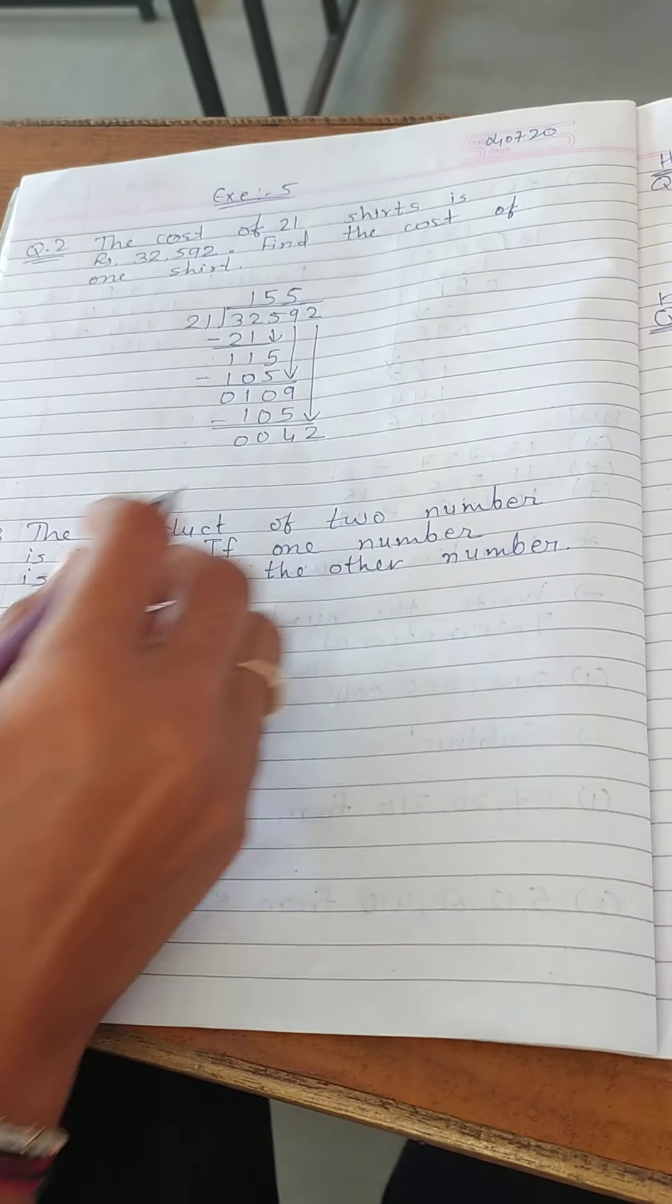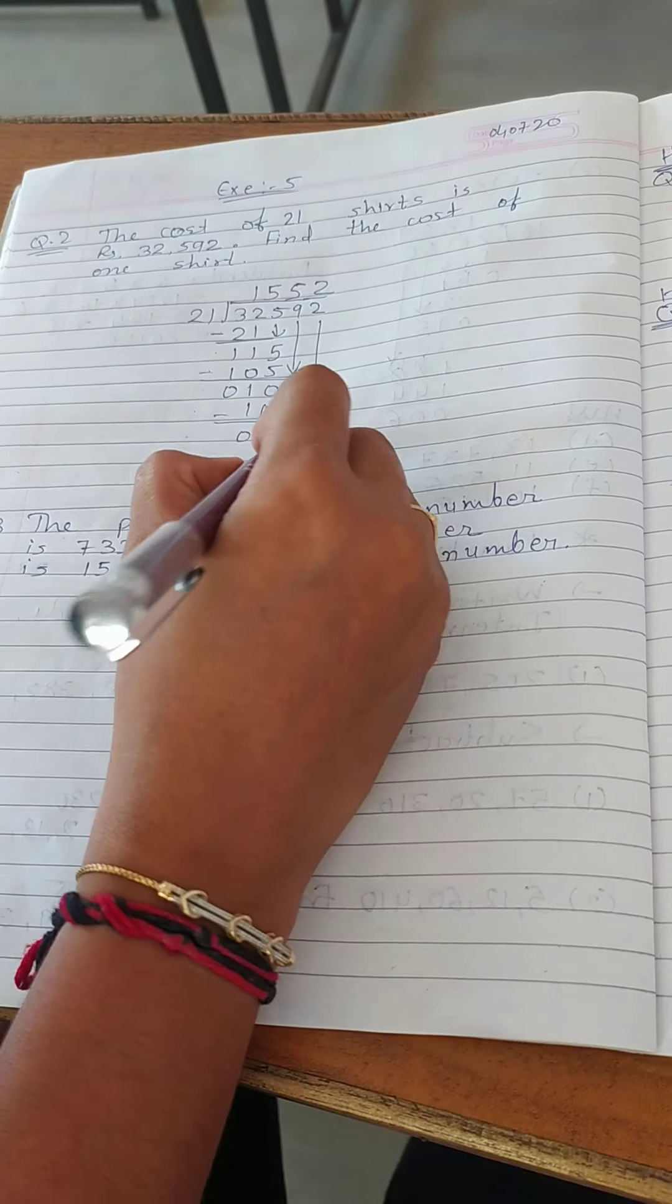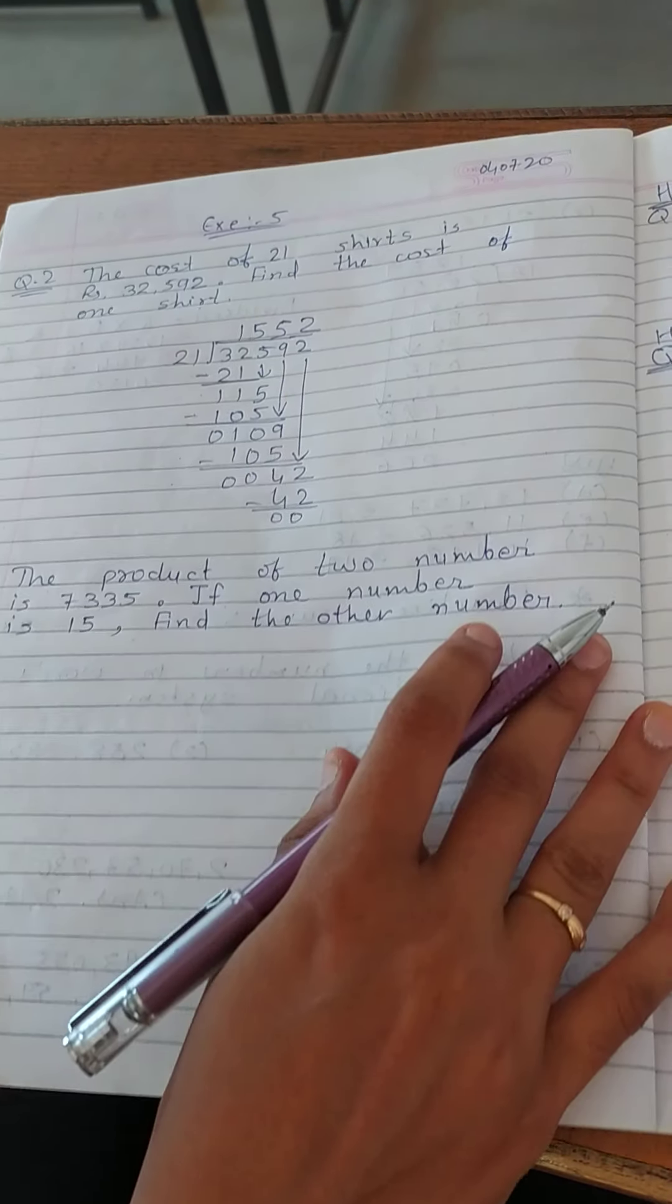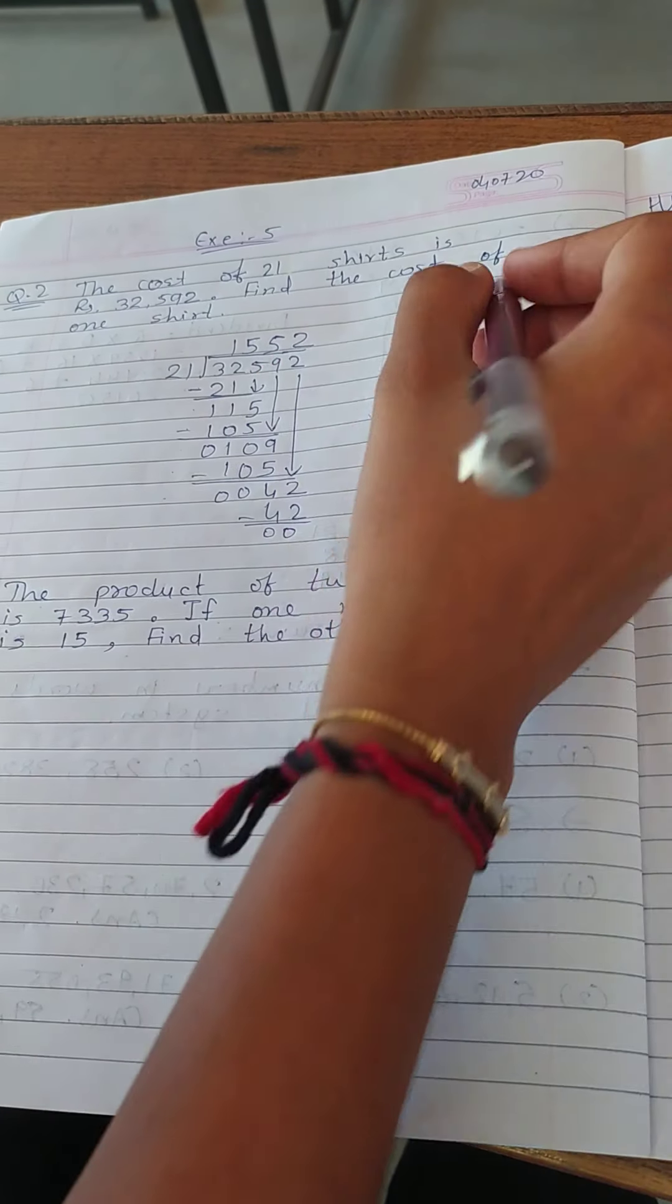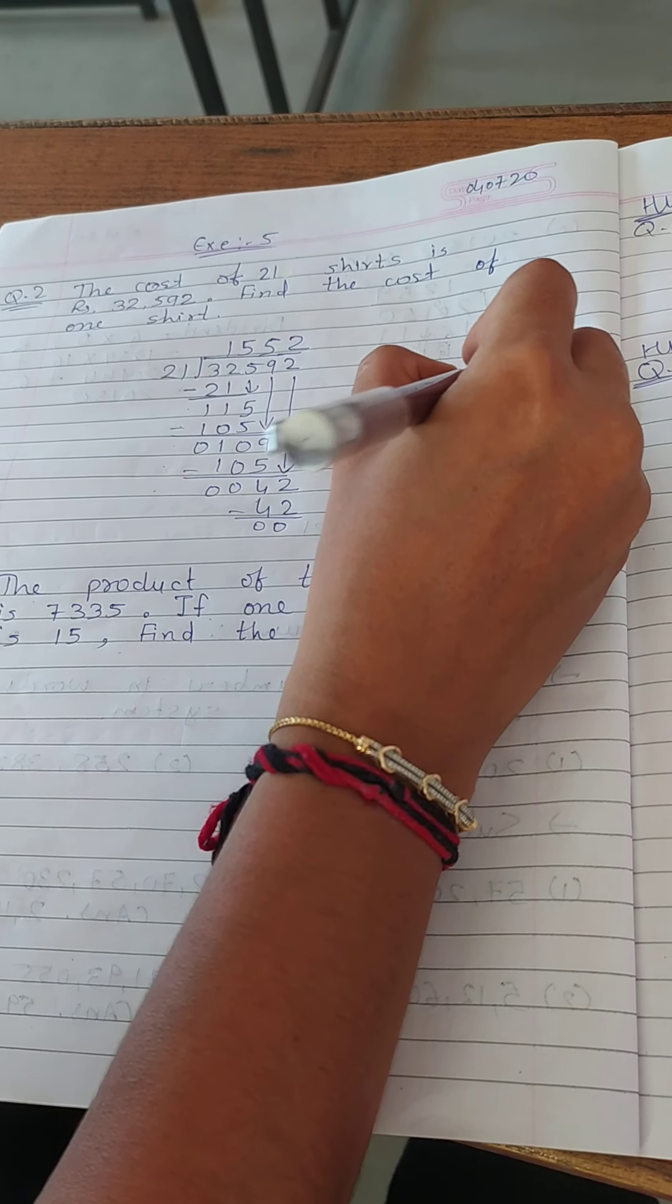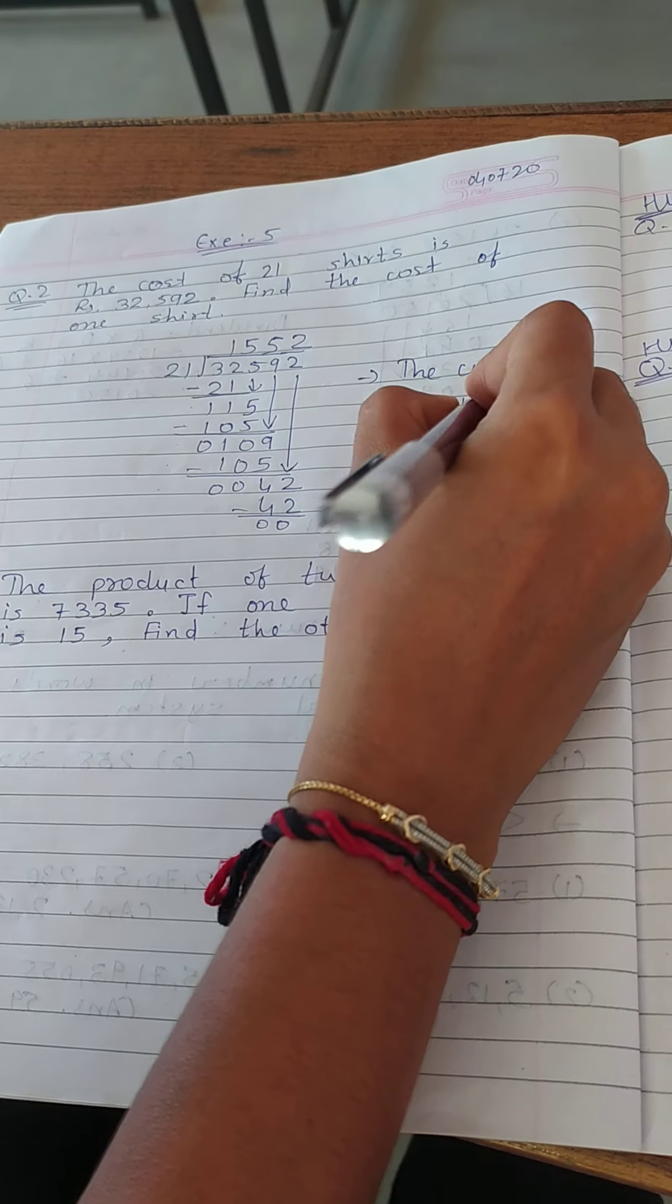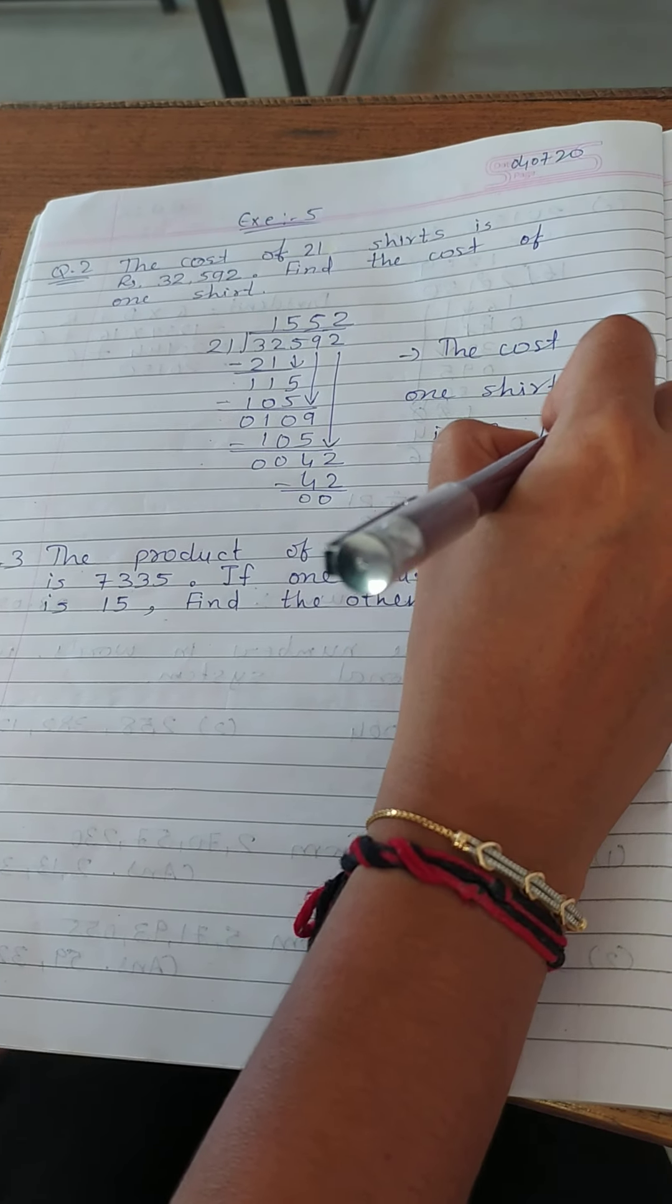Now drag the number 2. Here we get 42. So let's take 21 times 2 equals 42. Right? Now here we get 1552. That means we can write here the cost of 1 shirt is Rs. 1552.